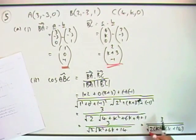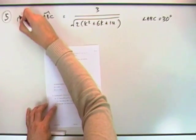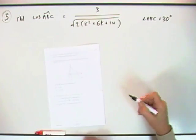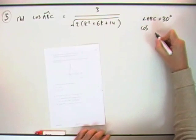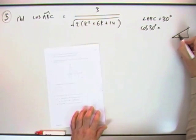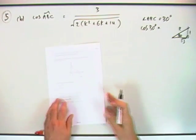Part b says if this angle is actually 30°, well if that angle is 30°, that means you've got the cos of 30°. And the cos of 30°—you can just quickly put down your triangle—the cos of 30° is root 3 over 2.